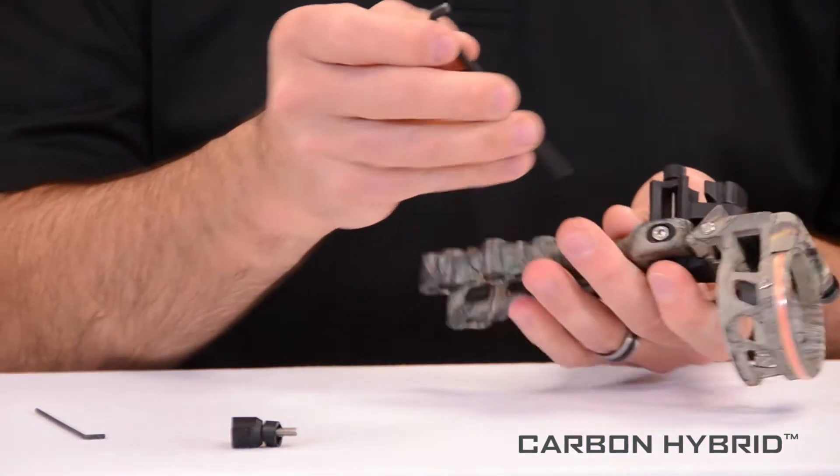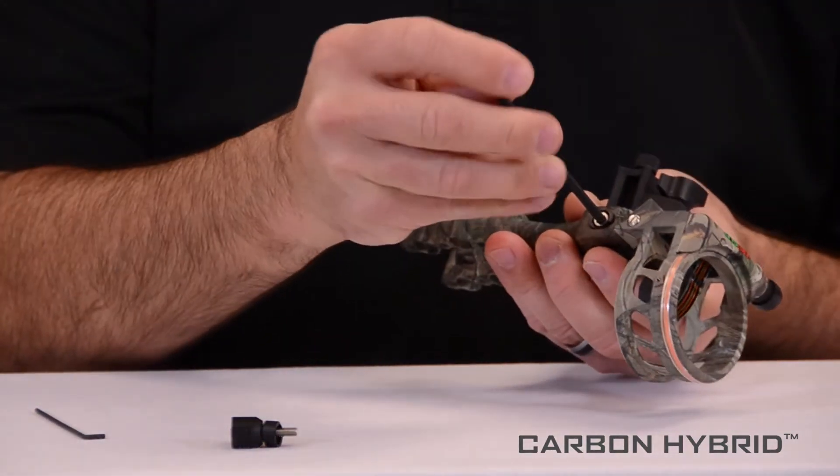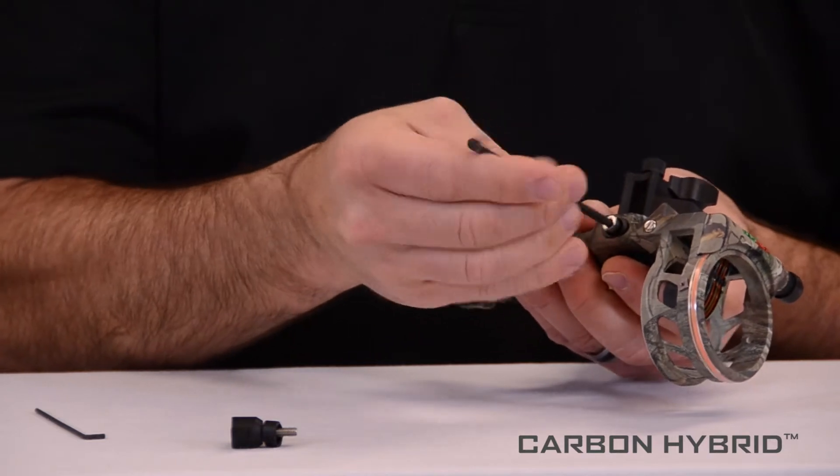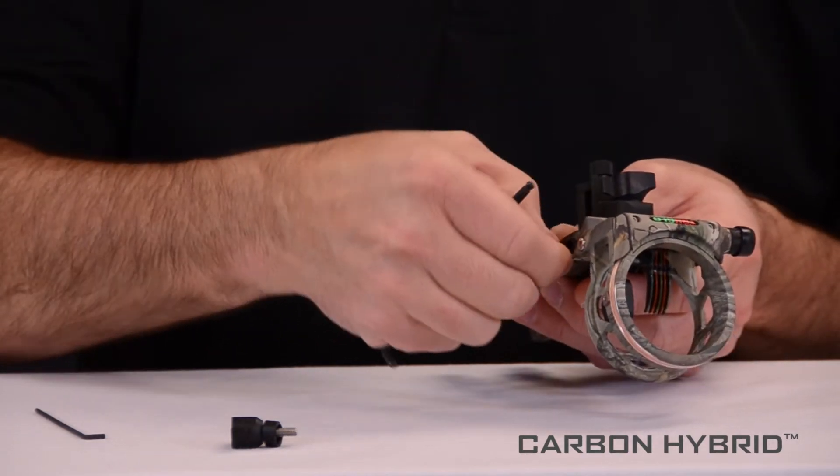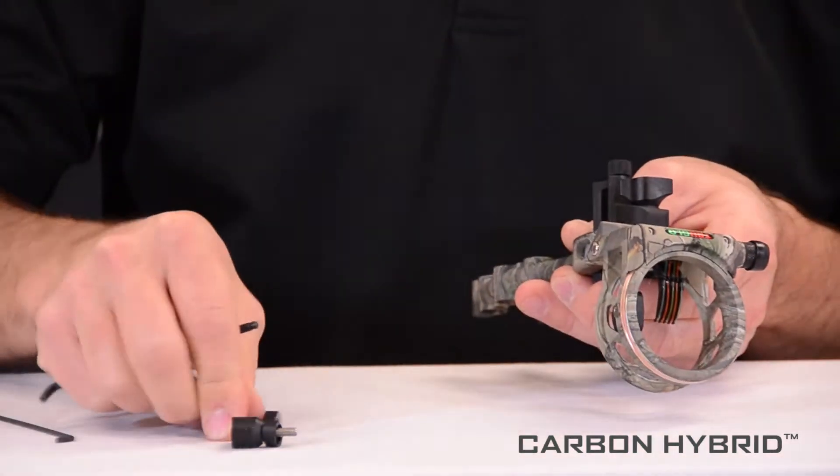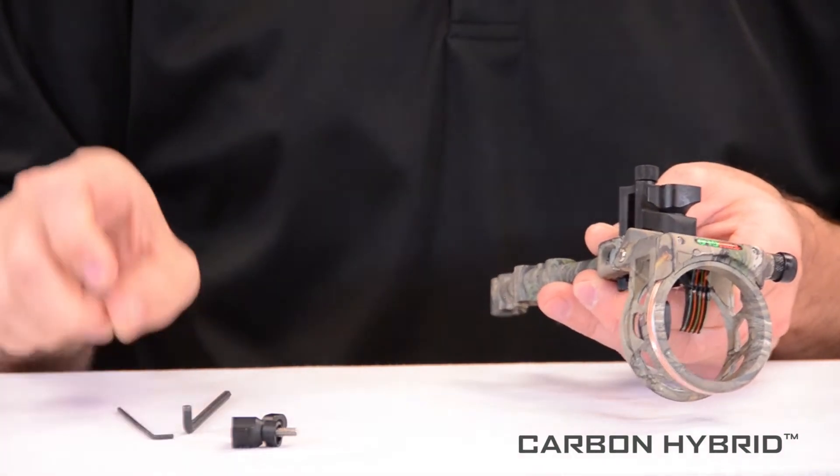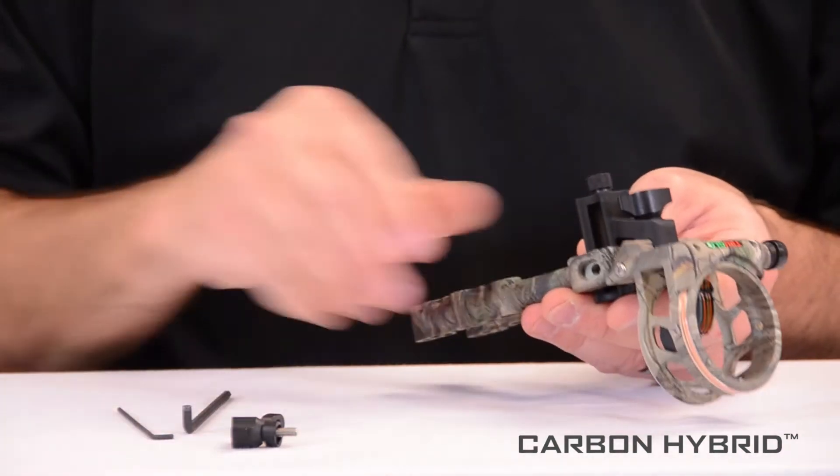On the bottom, there's a small allen head screw. Remove that and the spacer. Sometimes you may need the small allen wrench to pry out the spacer.